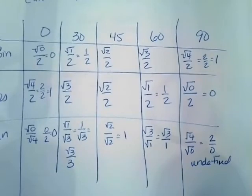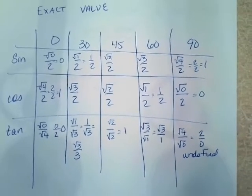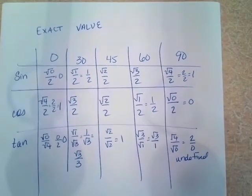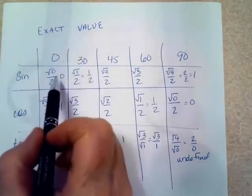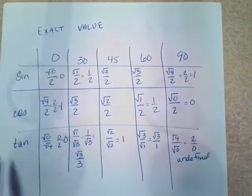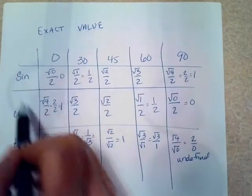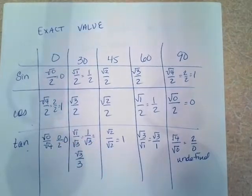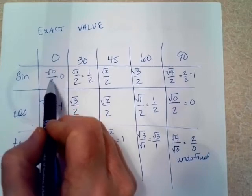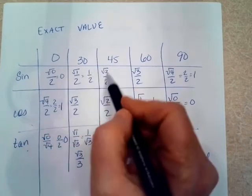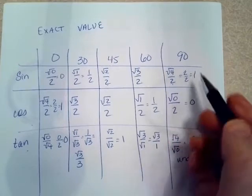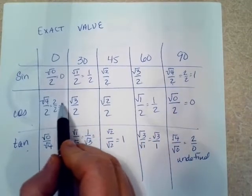This is an exact value chart. It goes right along with your unit circle. It's some reference angles. I want you to notice that it starts out with 0, 30, 45, 60, and 90, and sine, cosine, and tangent. Now as I start across here, I've got the square root of 0 over 2, the square root of 1 over 2, square root of 2 over 2, square root of 3 over 2, square root of 4 over 2. Then I turn right around and do it backwards for cosine.